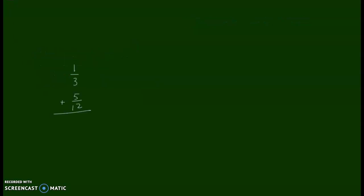For our practice problems today, we have some fraction addition. Our first problem is going to be 1 third plus 5 twelfths. There are a number of ways to find a common denominator, but like I've said in previous videos, I like to go with the multiples. I'm going to start by finding the multiples of 3: 3, 6, 9, 12. And I can stop there because 12 appears in both, so I can use that for my least common multiple, or common denominator.